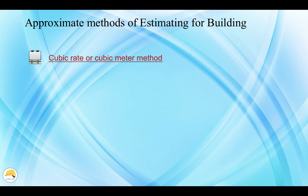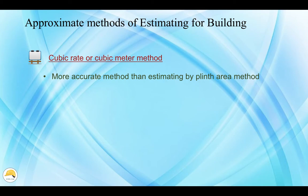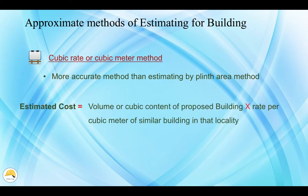The next method is the cubic rate method, or the cubic meter method. We need to calculate the volume content — that is, length into breadth into height. We calculate the total volume and multiply by the unit rate to get the total cost. The formula is: estimated cost equals volume or cubic content of the proposed building multiplied by rate per cubic meter of a similar building in that locality.